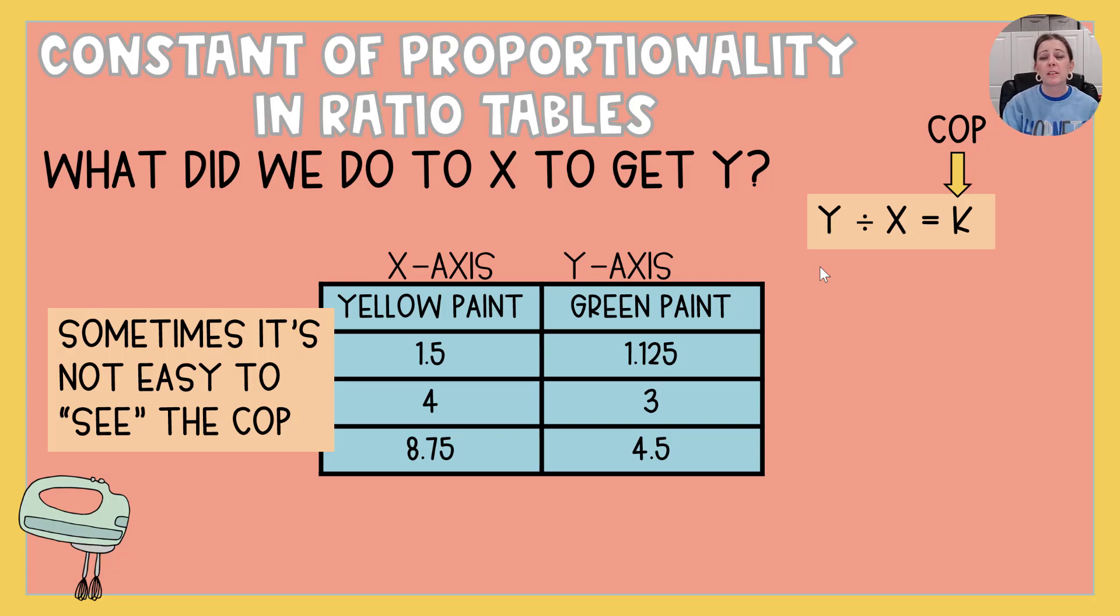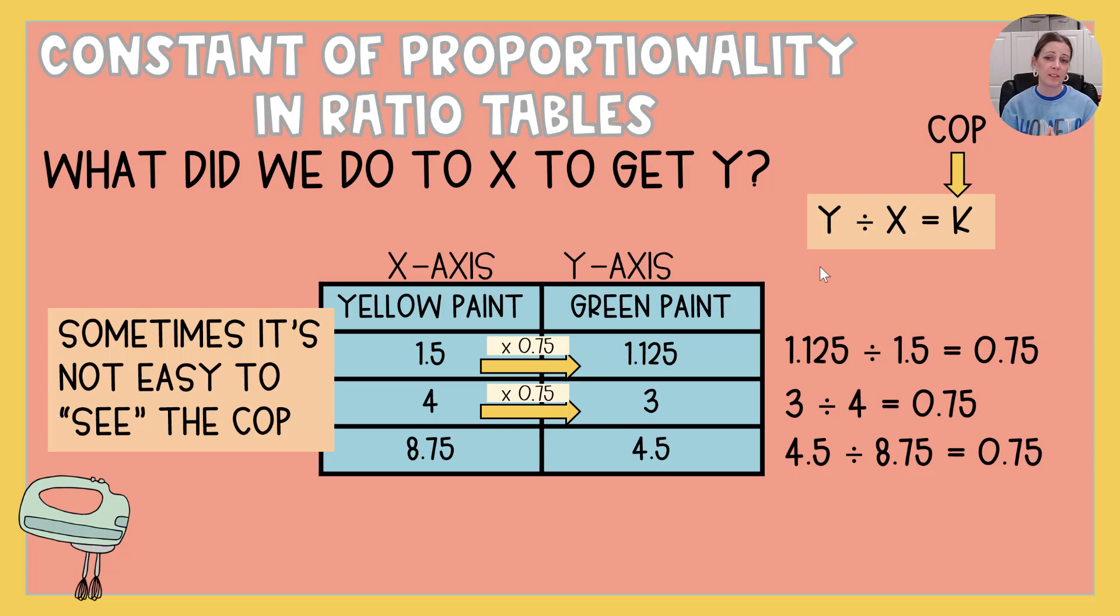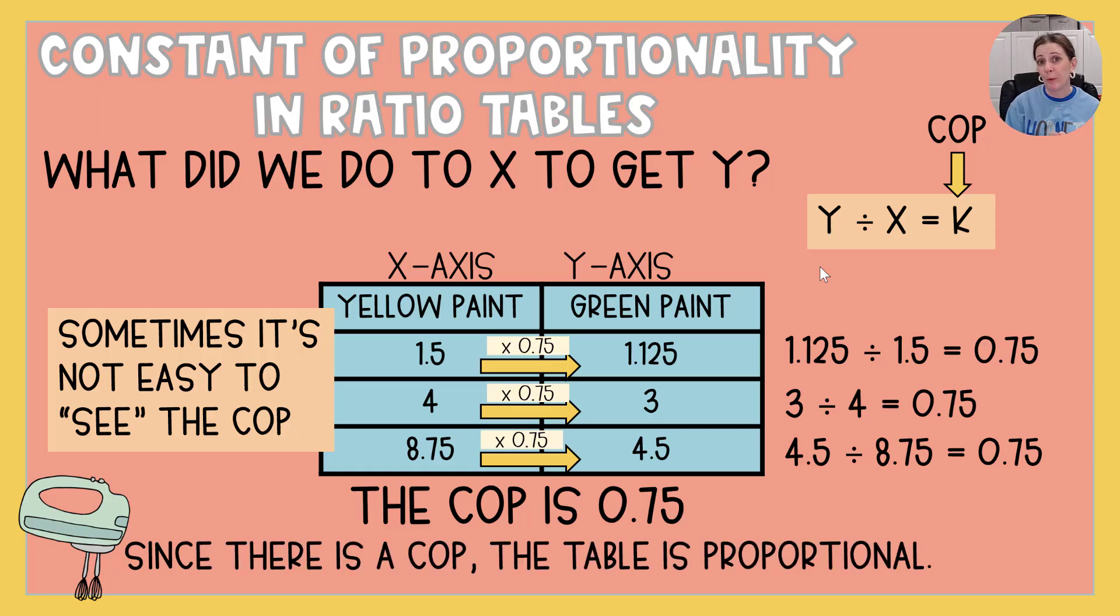So in this one, I'm going to take the y and divide by x. So for that first row, it's going to be 1.125 divided by 1.5. That equals three-fourths or 0.75. I'm going to do the same for the next one. 3 divided by 4 is 0.75. That means they took 4 and multiplied it by 0.75 to get three. And so far, so good. But we saw in that last one, we got to have it every time. So let's go ahead and do that 4.5 divided by 8.75. It does equal 0.75. Therefore, we're multiplying by 0.75. That's the constant of proportionality. And this table is proportional.